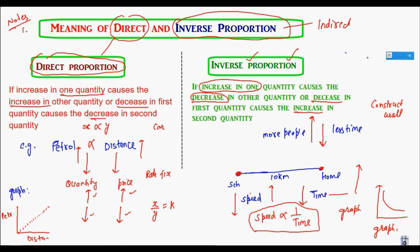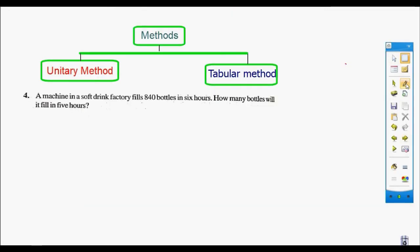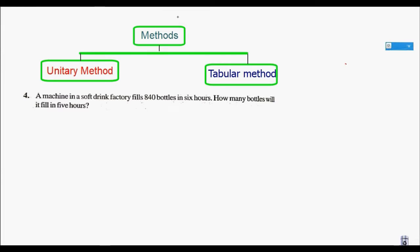Now we are clear with what is direct and inverse proportion. Our next task is: what are the methods to solve inverse and direct proportion? There are two methods we will study in this chapter. One is the unitary method, which you have already done in lower classes, and the other is the tabular method. The tabular method is my favorite and the important one — it is also time-saving.